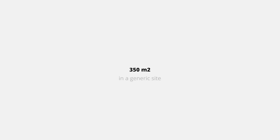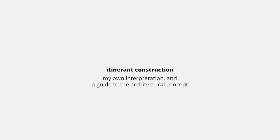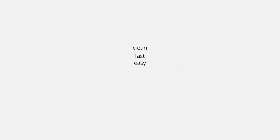The briefing said that the project had to be around 350 square meters on a generic site, and by a generic site I understood it would be a temporary construction. It wasn't really specified in the briefing — that was my own interpretation. For me, it was clear that it had to be a clean, fast and easy construction, yet of course elegant, well thought, and with a unique design.